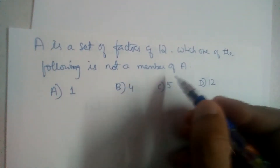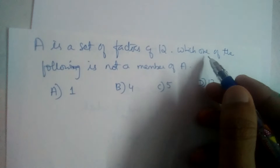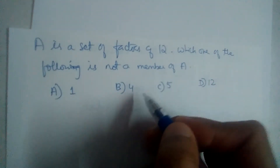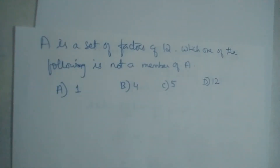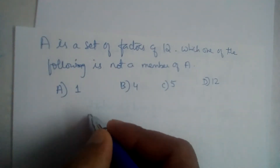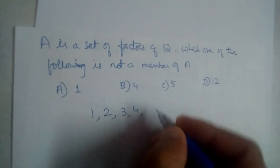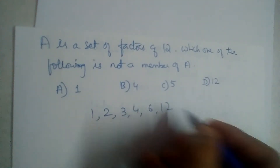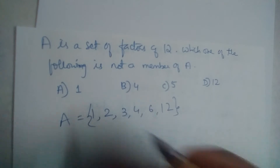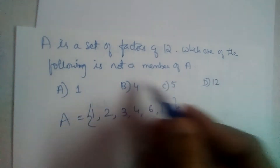Set A is the set of factors of 12. Which one of the following is not a member of A? We are given four options, so we need to write the factors of 12. The factors of 12 are 1, 2, 3, 4, 6, and 12. This is the set A.